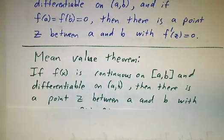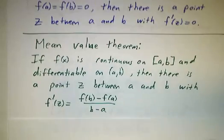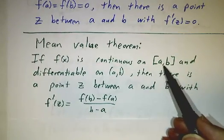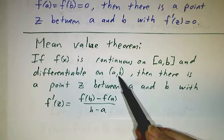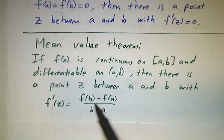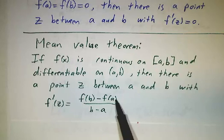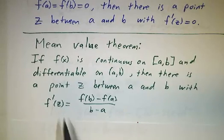We also had the mean value theorem, and it said if you've got a function and it takes on two different values at a and b, and you have to assume that the function is continuous in the closed interval and differentiable in the open interval, then there's a point z somewhere between a and b, such that the derivative at z is the average rate of change between b and a. And if you multiply both sides by b minus a,